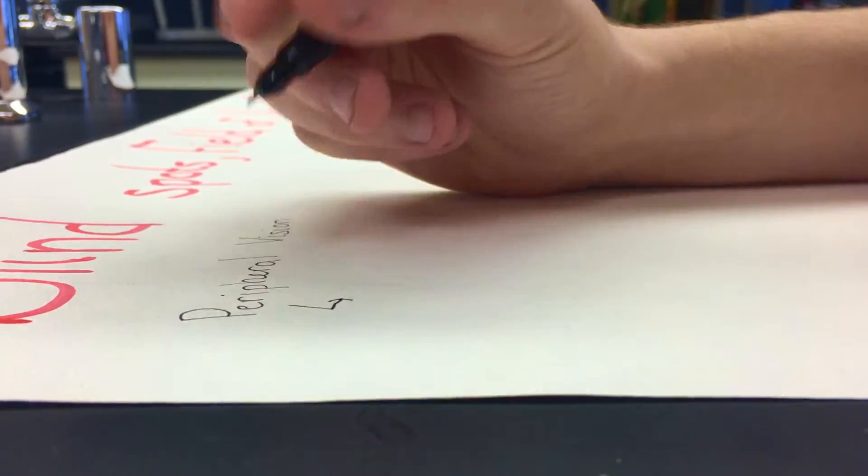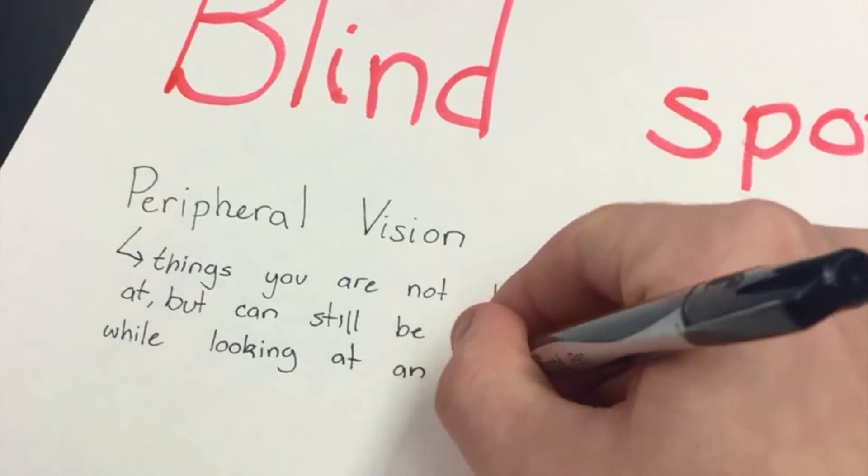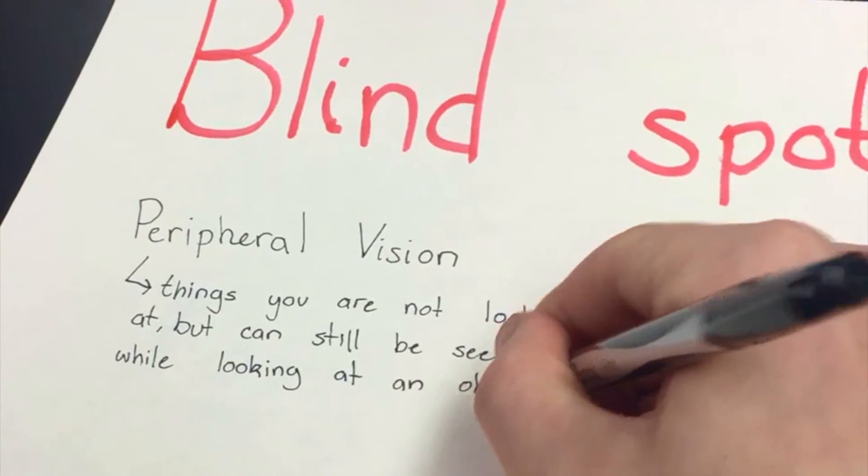Peripheral vision is a part of vision that occurs outside the very center of the gaze. There is a broad set of non-central points in the field of vision that is included in the peripheral vision.